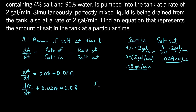So we'll go ahead and find the integrating factor. The integrating factor will be e to the integral of the function in front of A, which is 0.02. So the integral of 0.02 dt — and because it's dA/dt, we are integrating with respect to t. This gives us e to the 0.02t. That's our integrating factor.